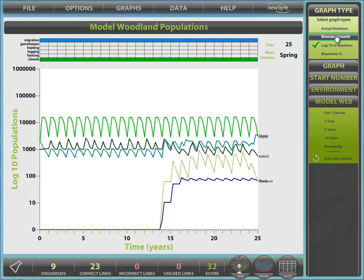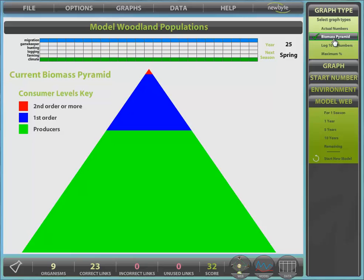Finally, graph type panel, where we can select various graph types including biomass pyramids. Visit our website for more information and to trial this and other programs: newbike.com.